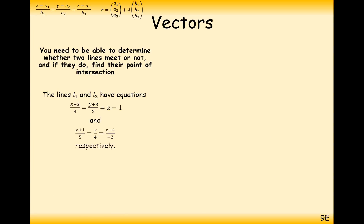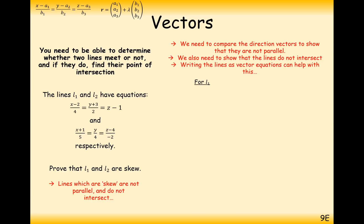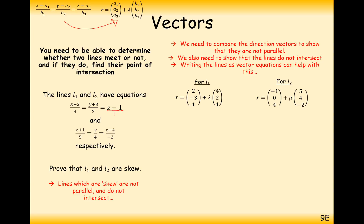Now let's look at a question where we need to prove that two lines are skew. First, check that we don't have parallel lines. The direction vectors appear on the bottom of the equations. It's a good idea to convert the Cartesian equations back into vector form as they're easier to work with — this conversion should be readily available in your brain. The direction vectors are 4, 2, 1 and 5, 4, minus 2 — there's no scalar multiple to get from one to the other, so no parallel lines here.